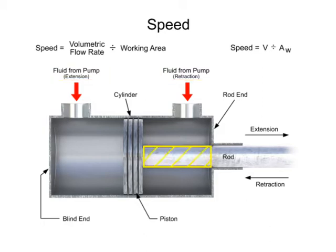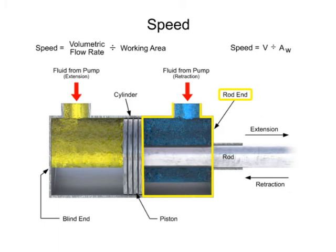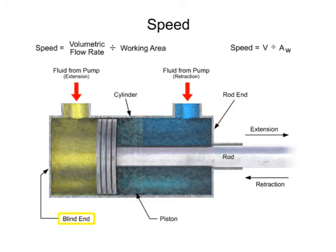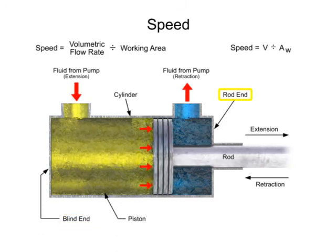Because the rod takes up space within the cylinder, less fluid is required to fill the rod end side. Therefore, fluid will fill the rod end side more quickly than it will fill the blind end. Since the rod end side fills more quickly, this type of cylinder will always retract faster than it can extend.